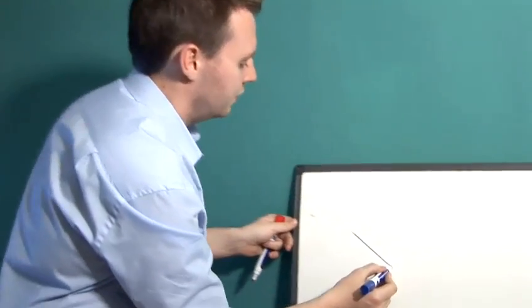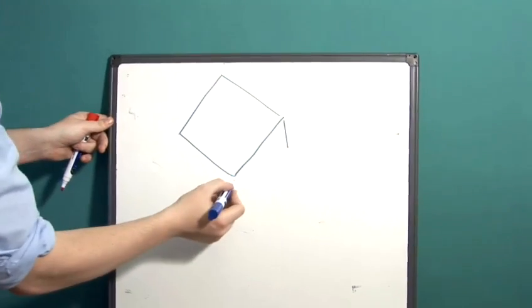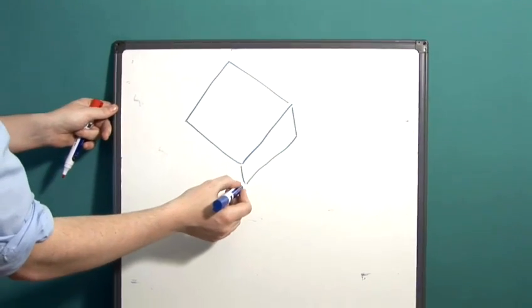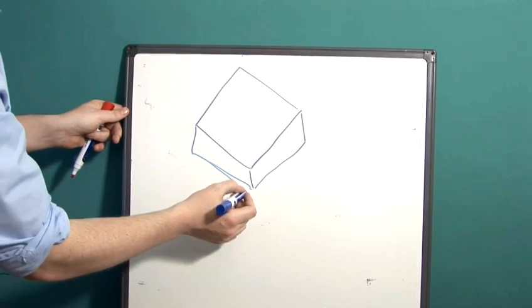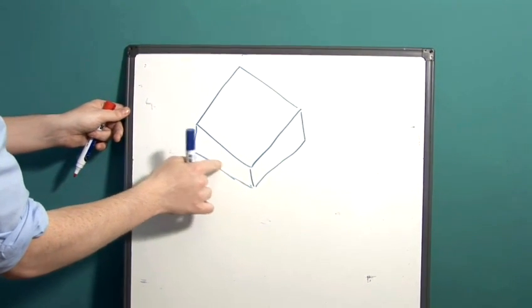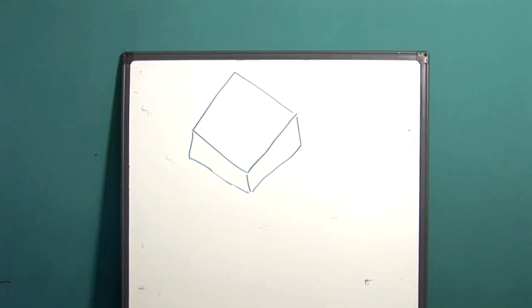Let's say we want to find the surface area of this rectangular prism. The first thing we need to realise is the best way to find the surface area is to find out how many different faces there are on the shape.